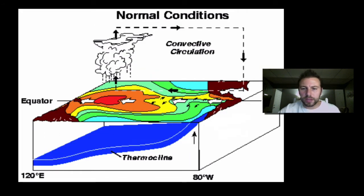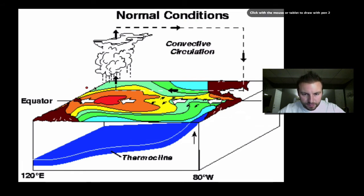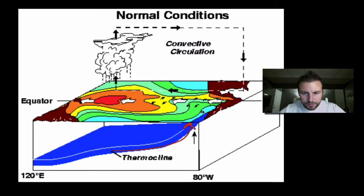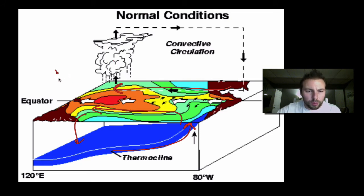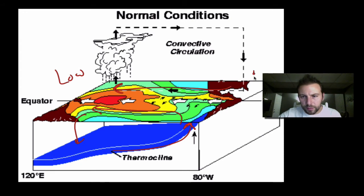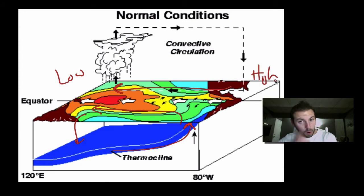Here's another look at the normal conditions showing the normal convection cells — global Pacific ocean currents and Pacific air currents above them. The thermocline represents a sharp change in temperature, and we have upwelling on the east side. This water travels across, heats up as it moves along the equator, and then sinks back down. The atmospheric pattern does the same — it moves across the equator, low pressure develops over Australia, and we have high pressure over South America.